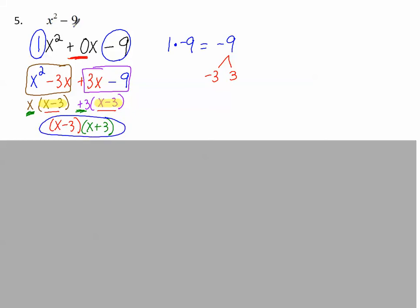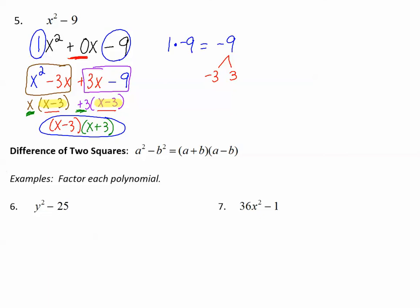But when I see a binomial where both terms are perfect squares, that's called a difference of two squares, and there's an easier way than this long process. When I see a difference of two squares, like a squared minus b squared, it always factors into two binomials: a plus b times a minus b. Difference means subtract — so I'm subtracting squares, a times a and b times b. One binomial is positive and one is negative, and I use one of each factor in each binomial.